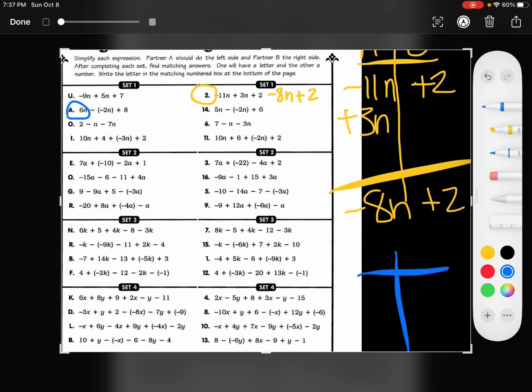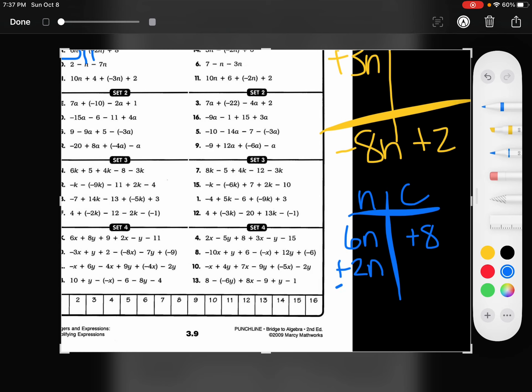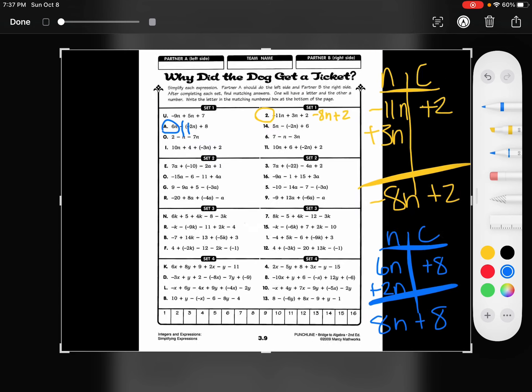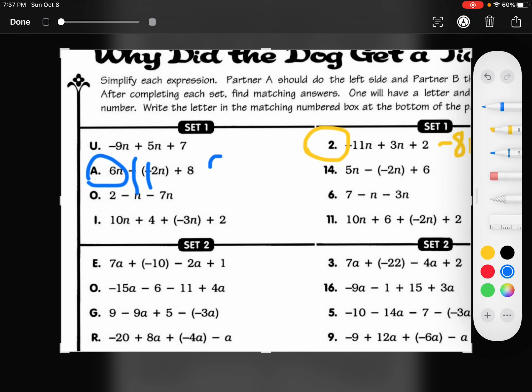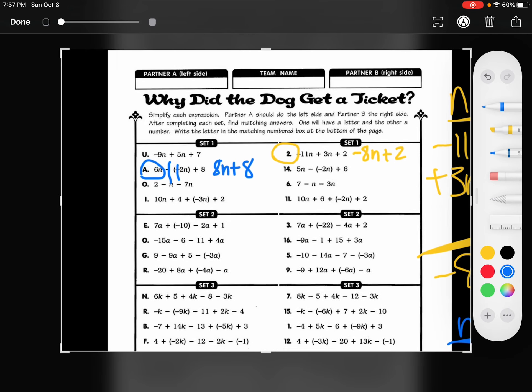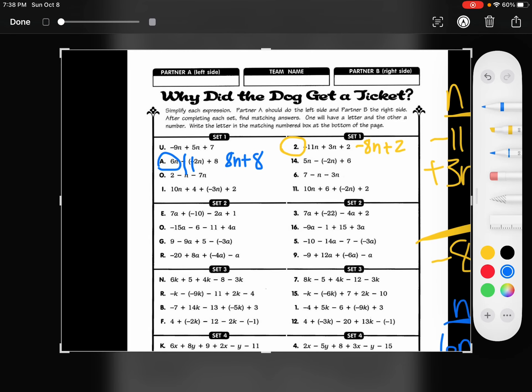I'm going to do part a. So n and constant. I have 6n and then minus negative, so plus positive. So plus 2n plus 8. It's going to be 8n plus 8.